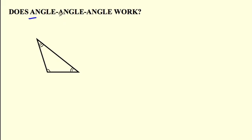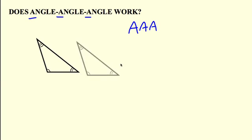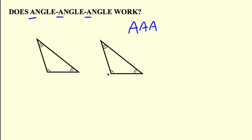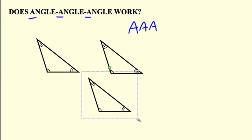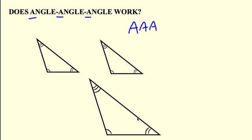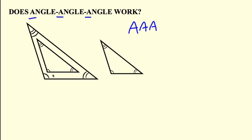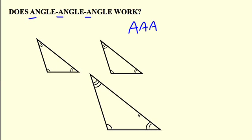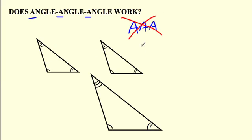What about Angle-Angle-Angle — does AAA work? Let's check it out. These look congruent, same shape, same angles. But does it always work? Check this out — did I change any of those angles? No. I could overlap them: this angle is this angle, this angle is that angle, that angle is that angle. Are they congruent triangles? No way — they're actually similar. So AAA does not work for congruence. They may be congruent, but it's not guaranteed. This one is a no — don't try to use it. It actually only does similarity.